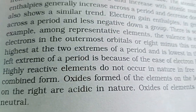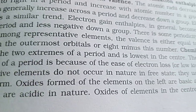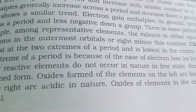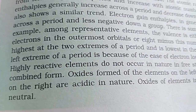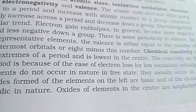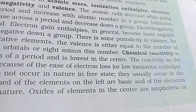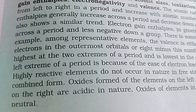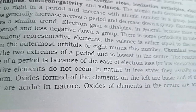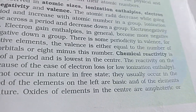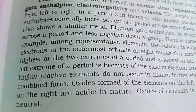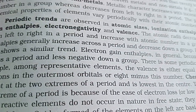The reactivity on the left extreme of a period is because of the ease of electron loss or low ionization enthalpy. Highly reactive elements do not occur in nature in free state; they usually occur in the combined form. Oxides formed by elements on the left are basic and those on the right are acidic in nature. Oxides of elements in the center are amphoteric or neutral.